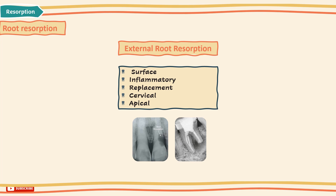External replacement root resorption usually happens secondary to irreversible damage to the cementum, leading to ankylosis, usually associated with high percussion notes — a metallic sound on percussion upon examination. Replacement resorption is usually progressive, meaning it cannot be arrested and is not influenced by endodontic therapy, eventually leading to the root being replaced by bone. Radiographically, you can see irregularities and pits on the outer surface of the root with adjacent radiolucency.